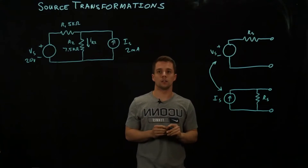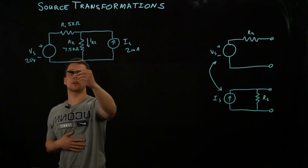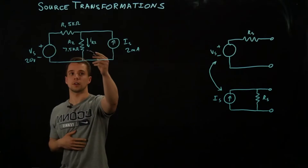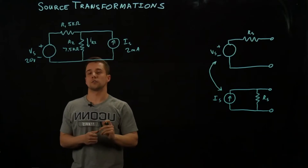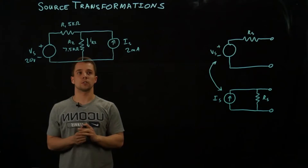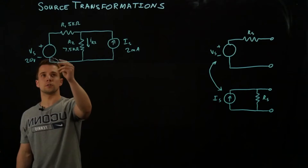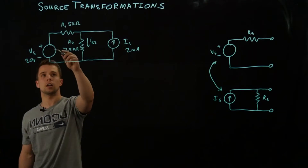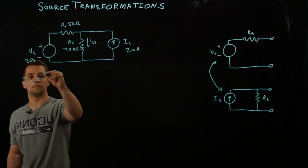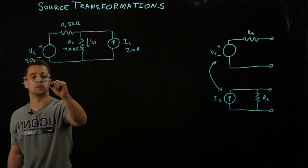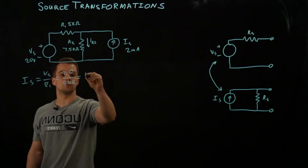Now we have an example problem. In this example problem, we have both a current source and a voltage source, and we want to find the current through this second resistor. I think the easiest way to approach this is to transform the voltage source into a current source. To find the current source, we do VS over R1, which is 20 volts divided by 5 kilo ohms, and that gives us 4 milliamps.